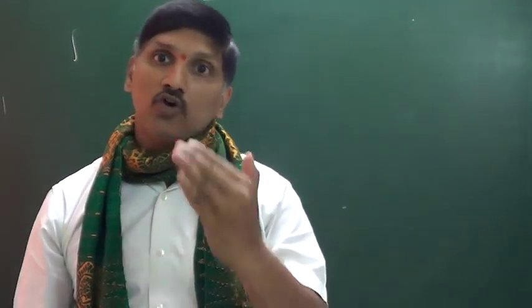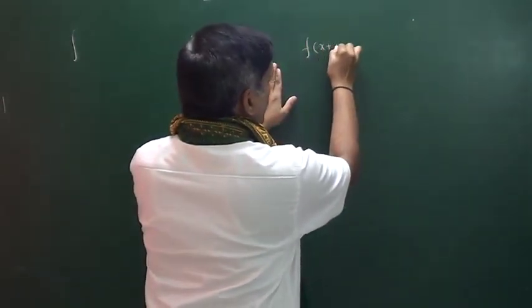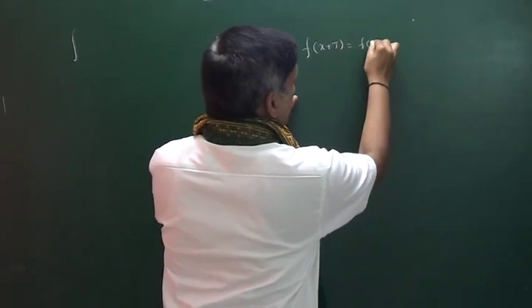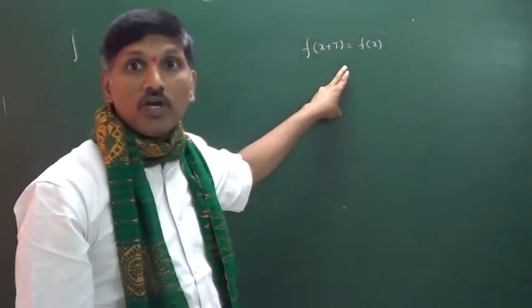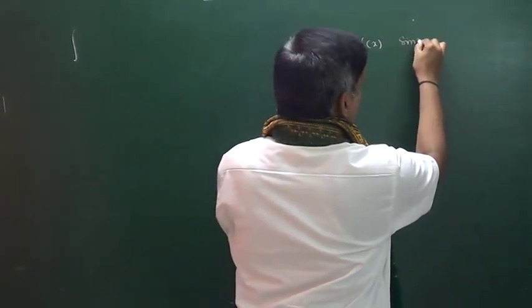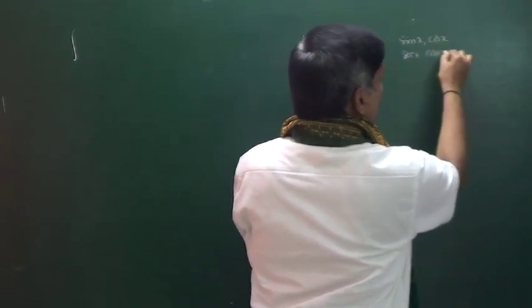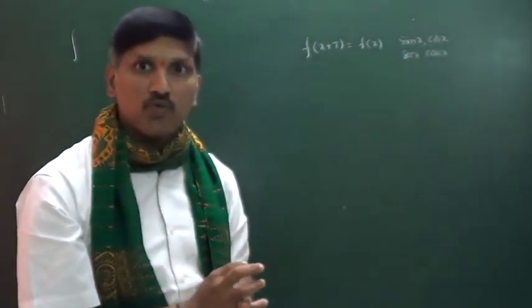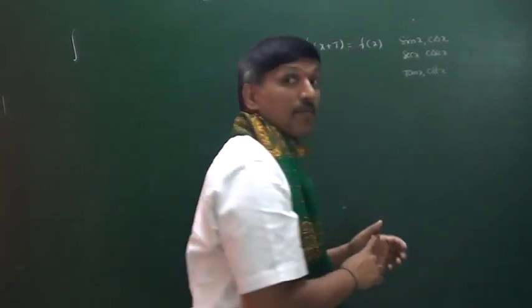Before going to discuss this particular idea, I hope everyone knows the definition of a periodic function. A function f(x) is said to be a periodic function if f(x+t) must be equal to f(x). The least positive real number t is called the fundamental period of the function. Sin x, cos x, sec x, cosec x are all periodic functions with period 2π.